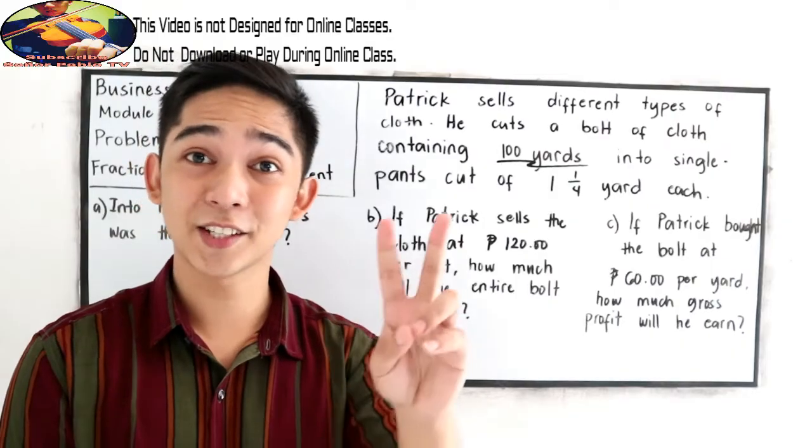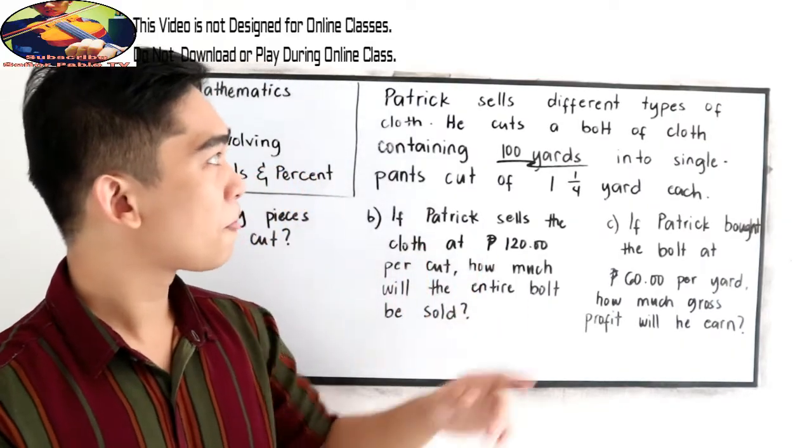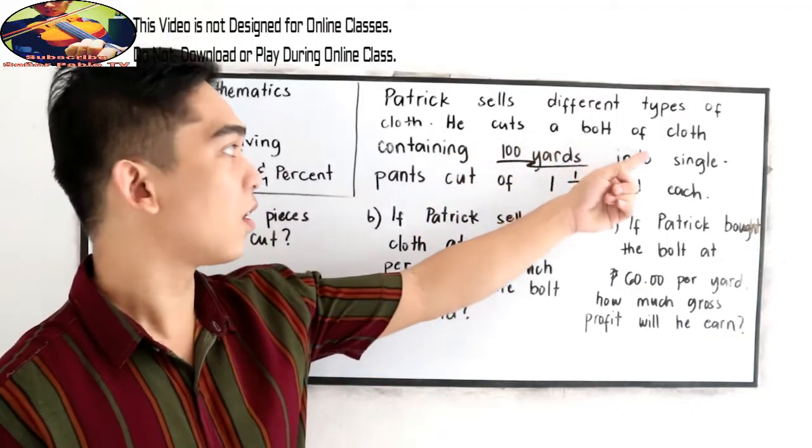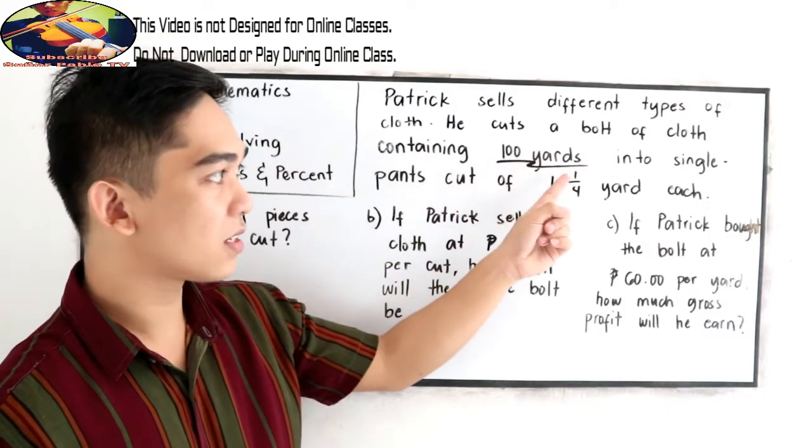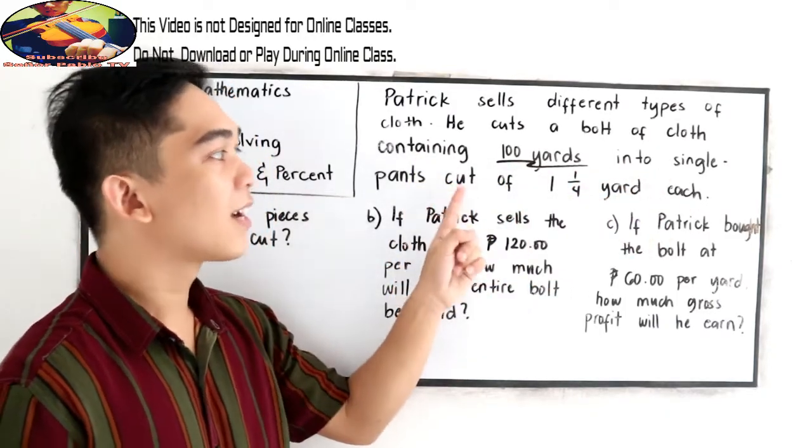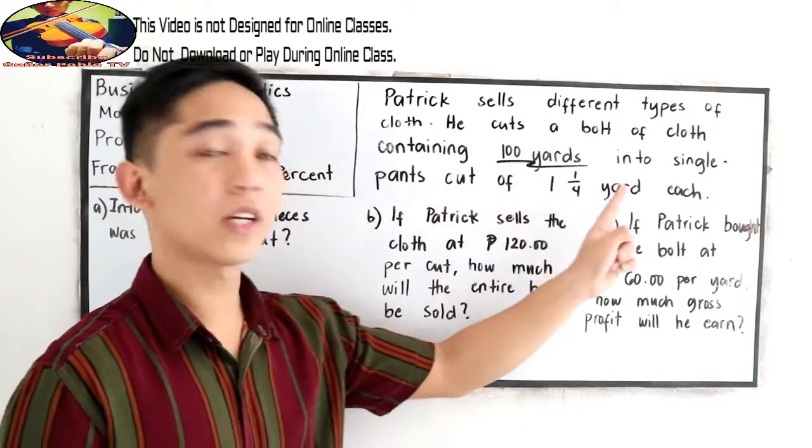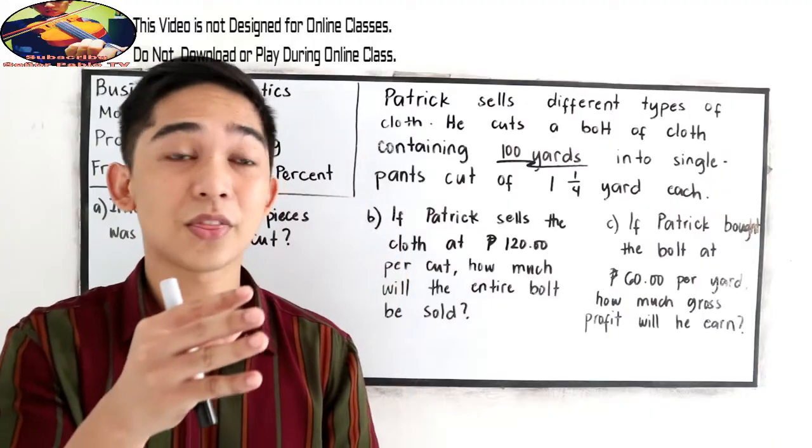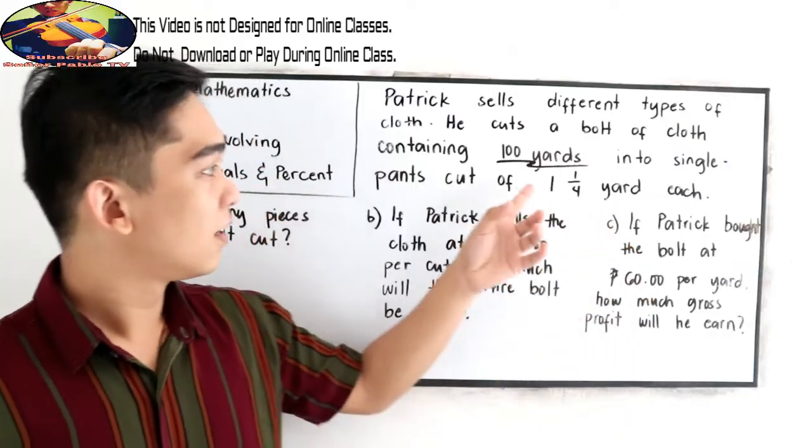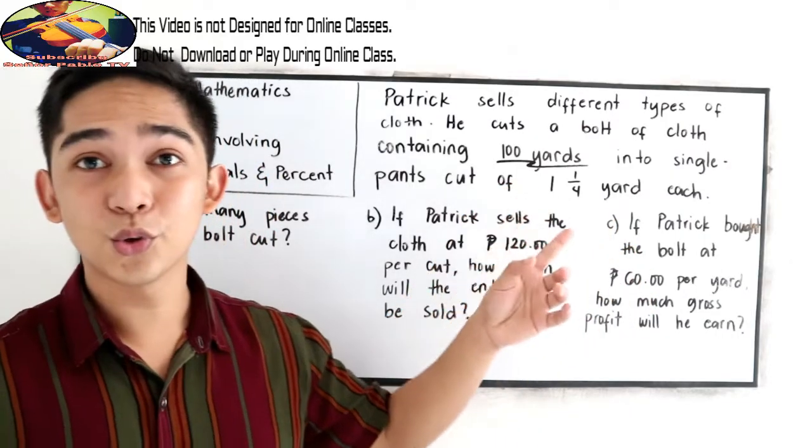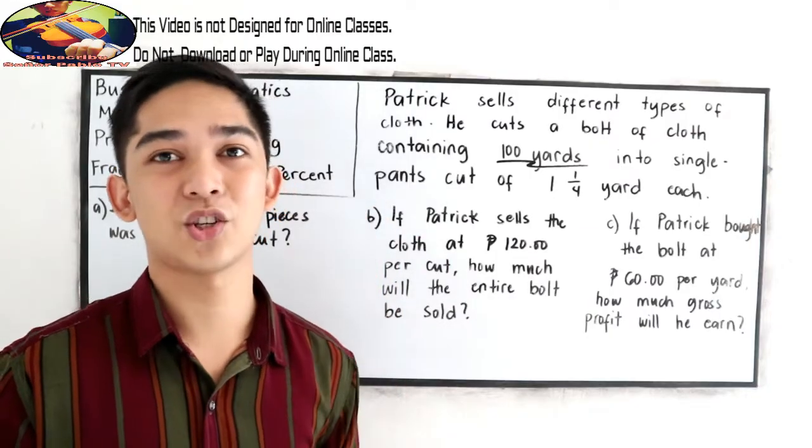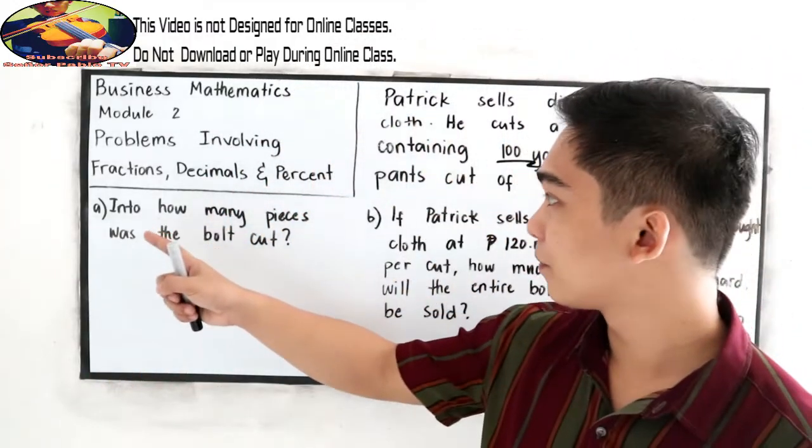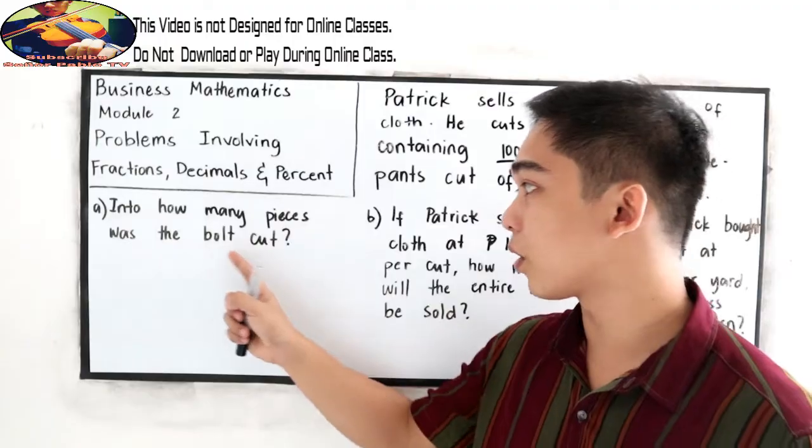Let us proceed to our second example. Patrick sells different types of cloth. He cuts a bolt of cloth containing 100 yards into single cuts of 1 and 1/4 yard each, or 1.25 yards each. The question is, letter A, into how many pieces was the bolt cut?